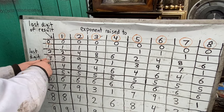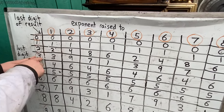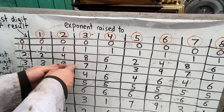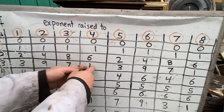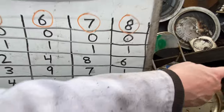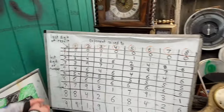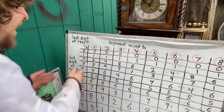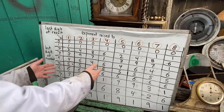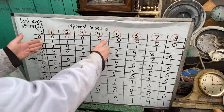Numbers ending in the digit 3 when raised to different powers end in the digit 3, then 9, 7, 1, 3, 9, 7, 1, 3, 9, etc. And every single one here has a cycle of at most 4.